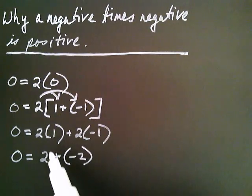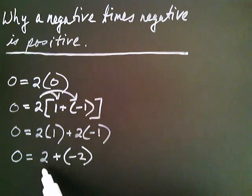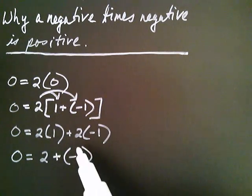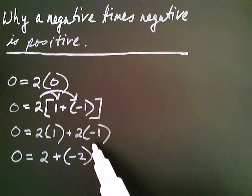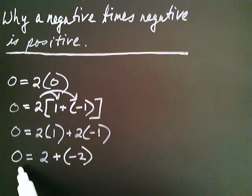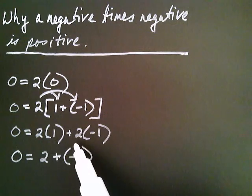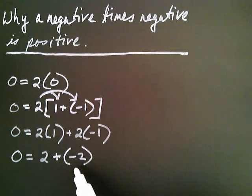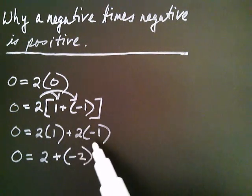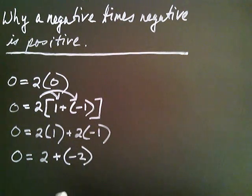After all, two times one is two. But then two times negative one — we weren't sure what that was. Now I can clearly see that because I have zero on the left-hand side, two times negative one had to be negative two. So two times negative one equals negative two.